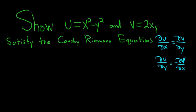Show u and v satisfy the Cauchy-Riemann equations. So all we have to do is take the partials and make sure that when we plug them into these equations the result is true.